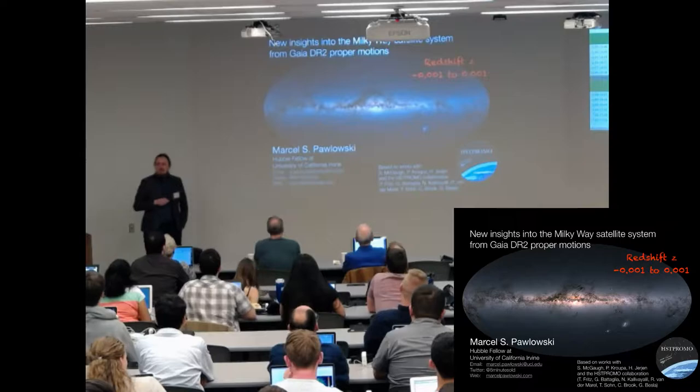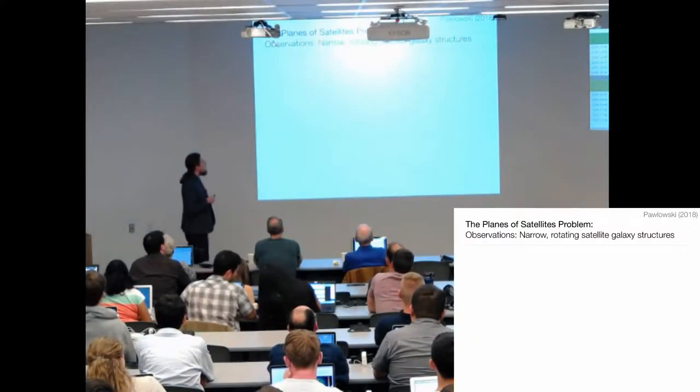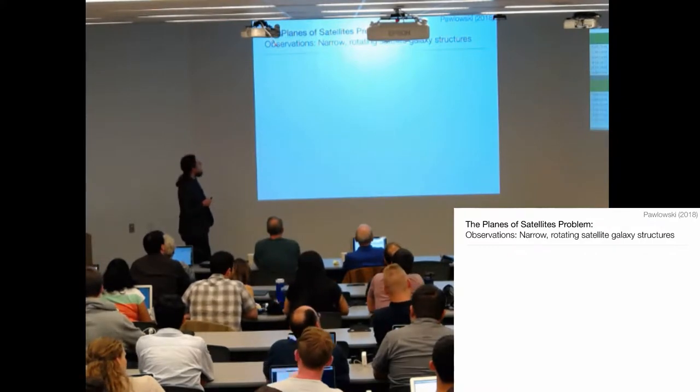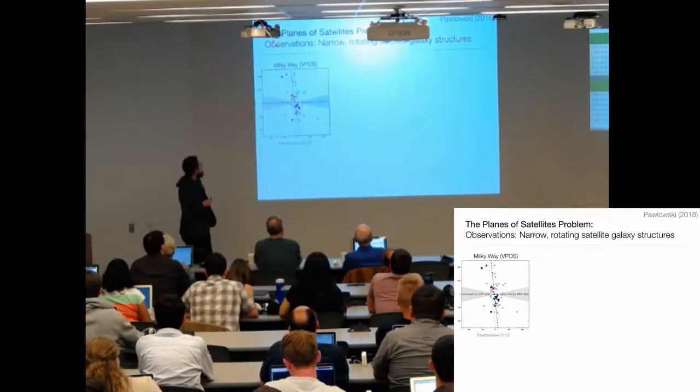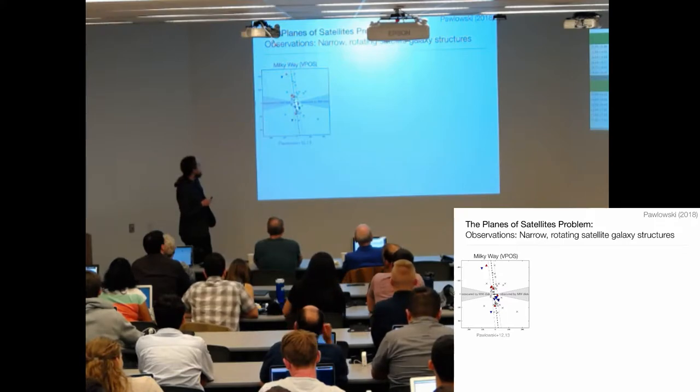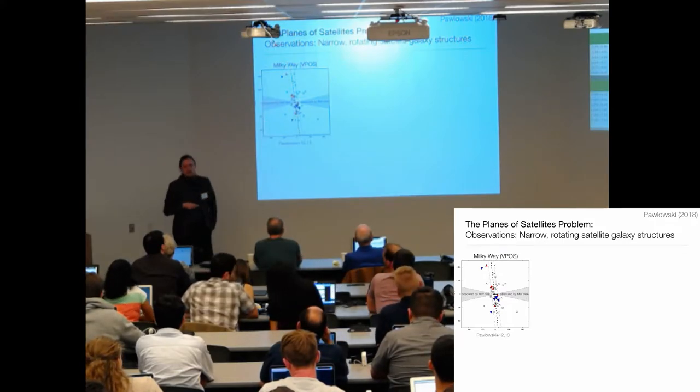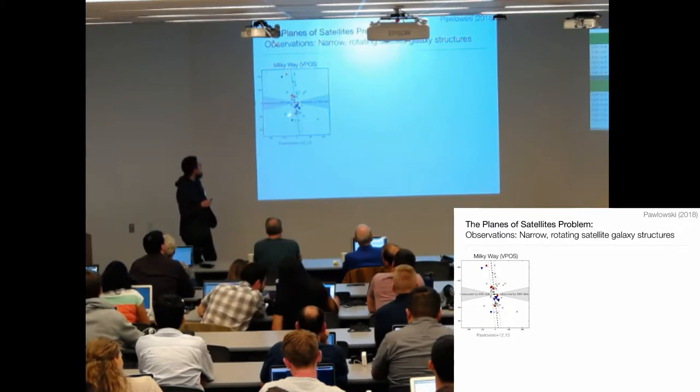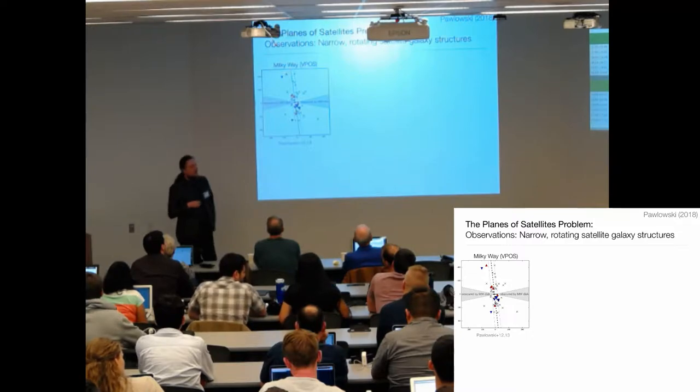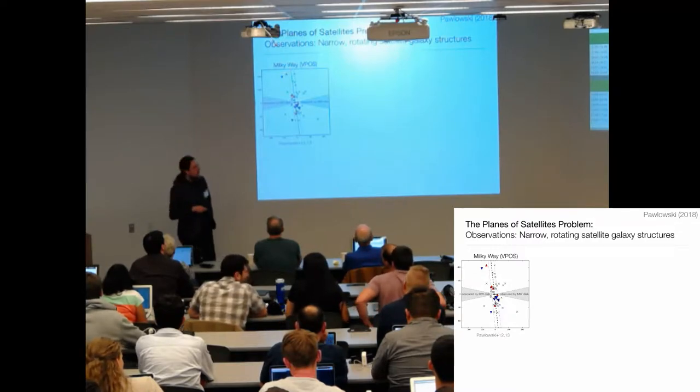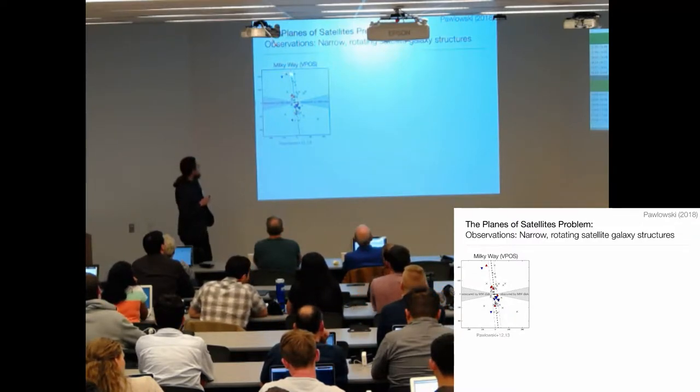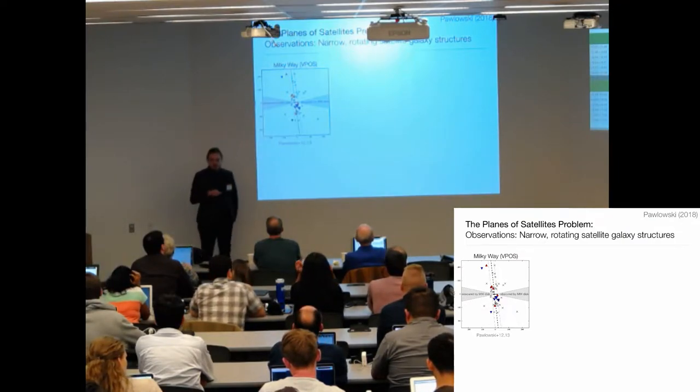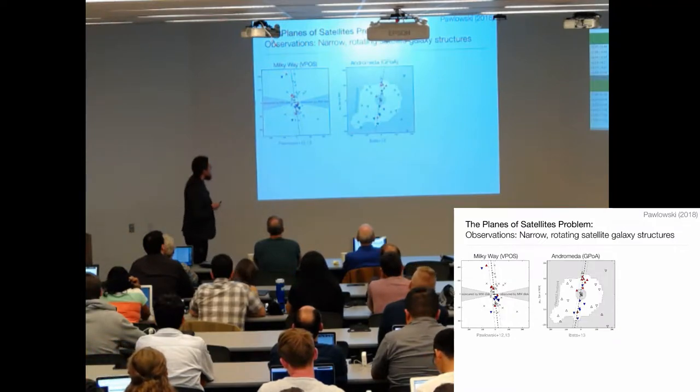Much of my work is motivated by looking at so-called planes of satellite galaxies. Quick recap of what we know right now. We have a highly flattened distribution of satellite galaxies around the Milky Way, and before Gaia there were indications that this is rotating. Color coded here is a view - stuff down here is approaching, stuff up here is receding, looks like it's a rotating plane.